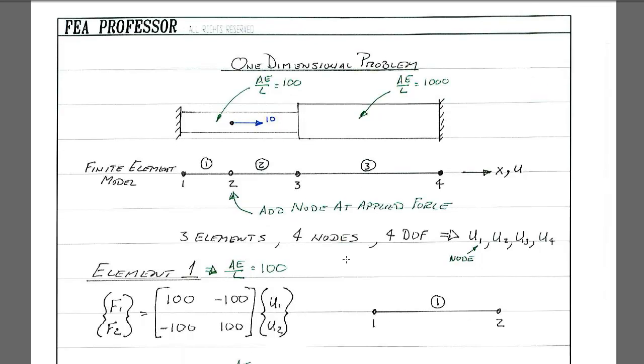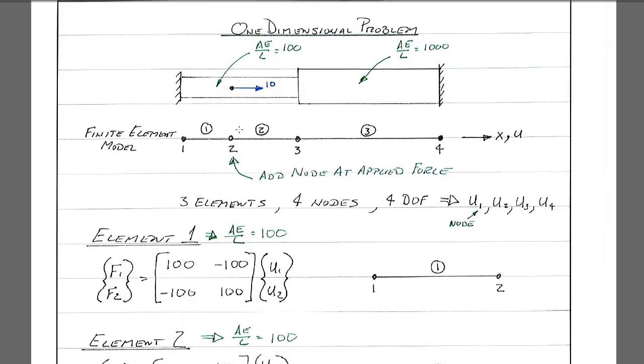So let's do a problem here. Let's just do something simple, just a bar with two different cross sections. We'll just say AE over L equals 100 for the small section. AE over L for the big section is 1,000. We'll apply a load of 10 in the middle here. So if we break that down into a finite element model, we have four nodes and we have three elements. Of course, we have to have a node here so we have a location to apply that load.